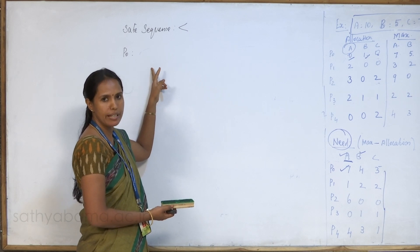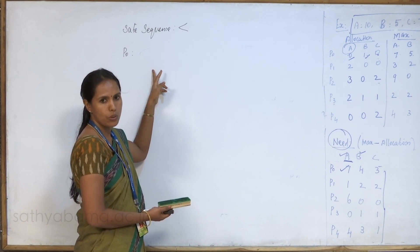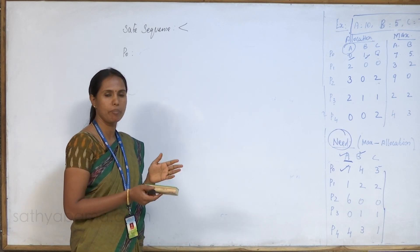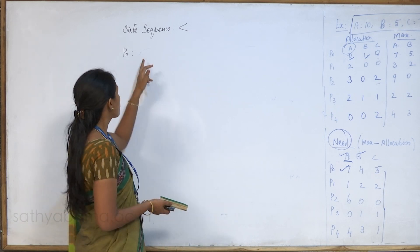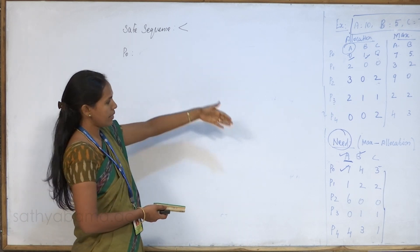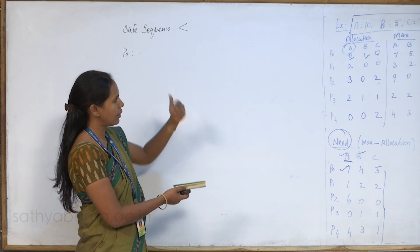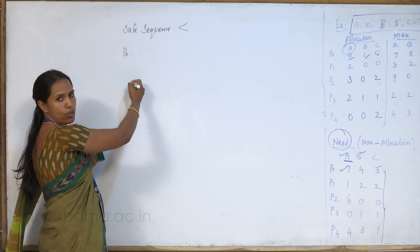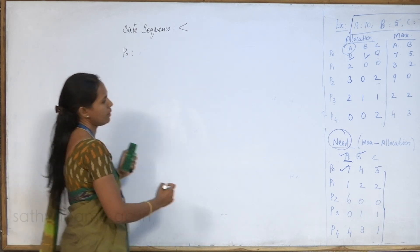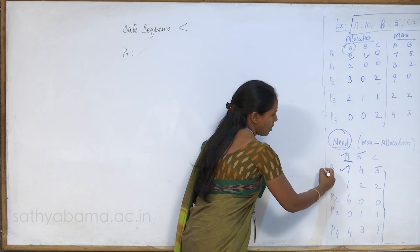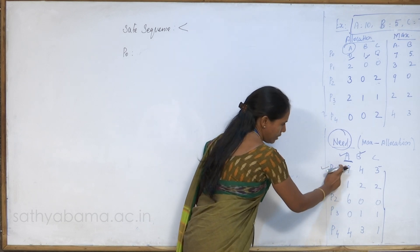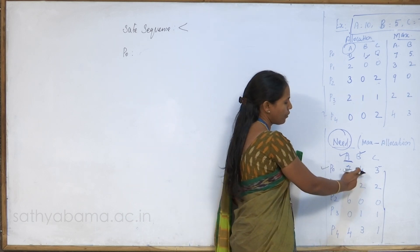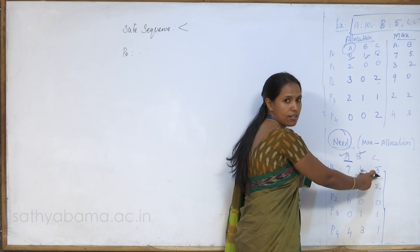When the system is able to produce a safe sequence, the system is in the safe state, meaning there is no deadlock situation in future. We start with process P0. The need matrix for P0 is 7, 4, 3 — meaning 7 instances of resource type A, 4 of resource type B, and 3 of resource type C.